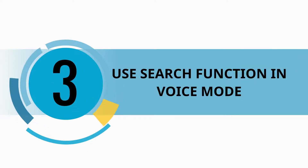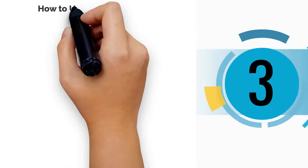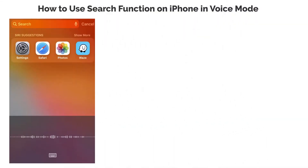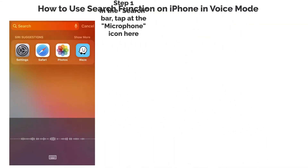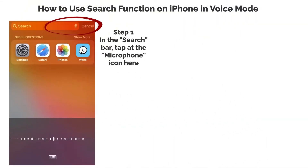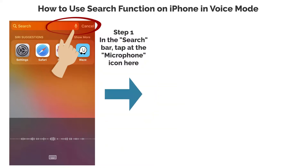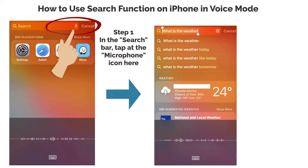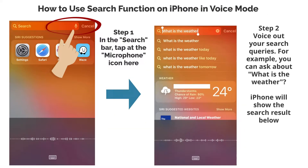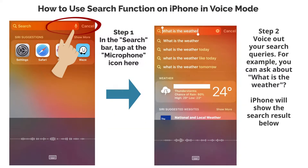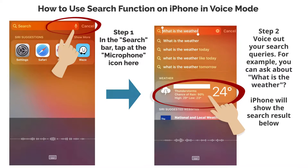Use search function in voice mode. Step 1: in the search bar, tap at the microphone icon here. Step 2: voice out your search queries. For example, you can ask about what is the weather. iPhone will show the search result below.